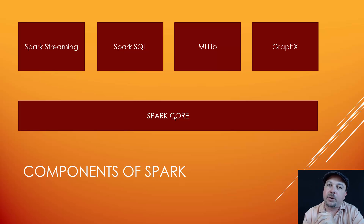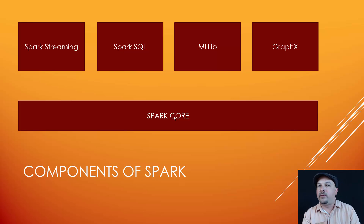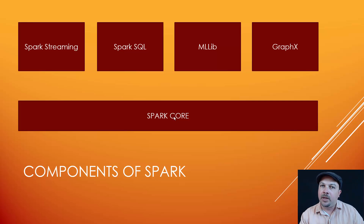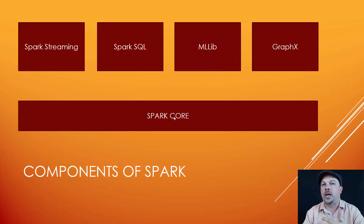One of those is Spark Streaming — a technology built on top of Spark that can handle little microbursts of data as they come in in real time. You can process a stream of data from a fleet of web servers, or maybe sensors from an Internet of Things application, as they come in one second at a time and just keep updating your results as you go in real time.